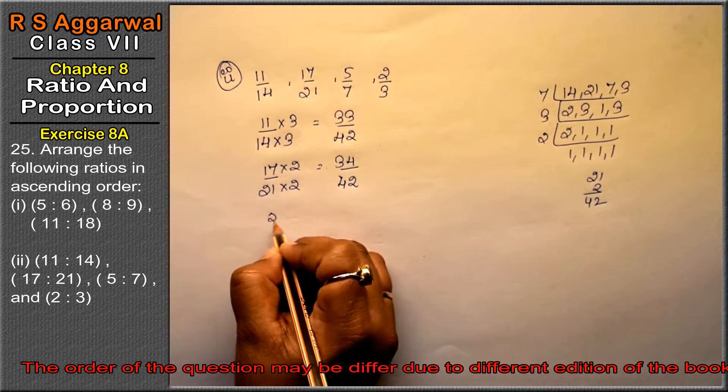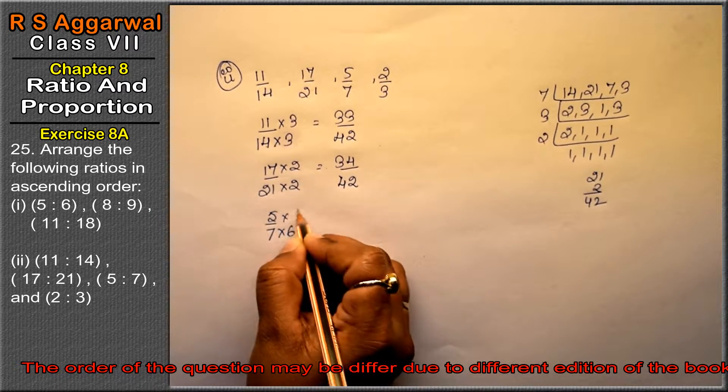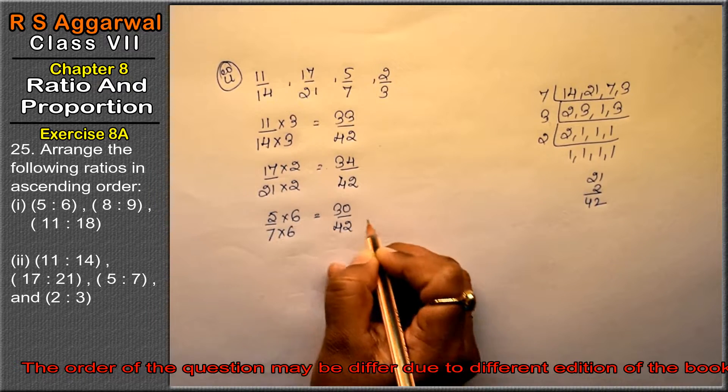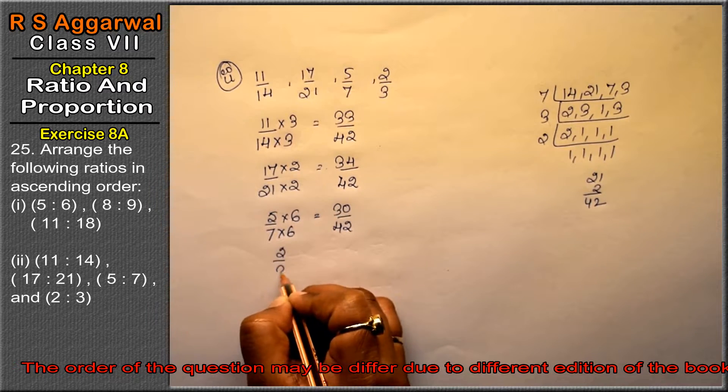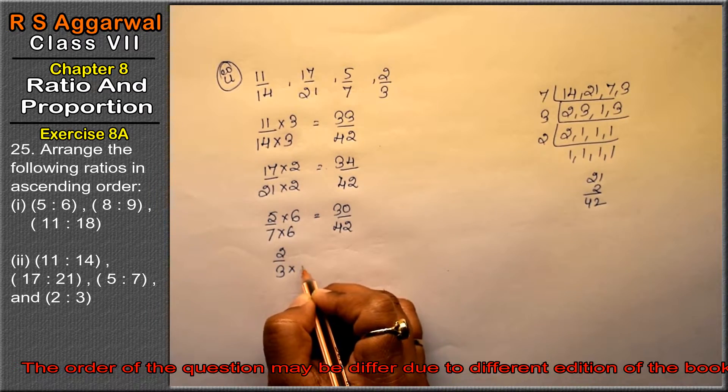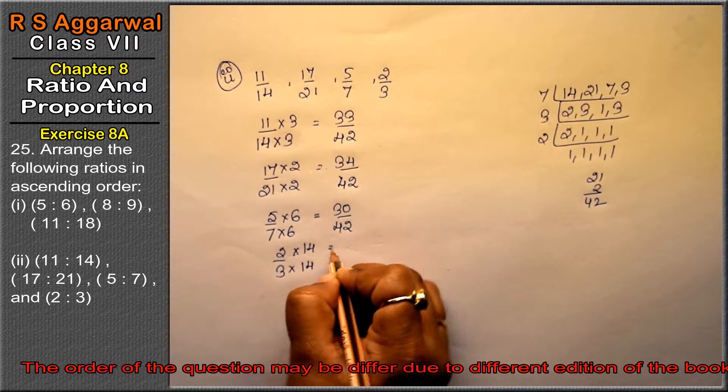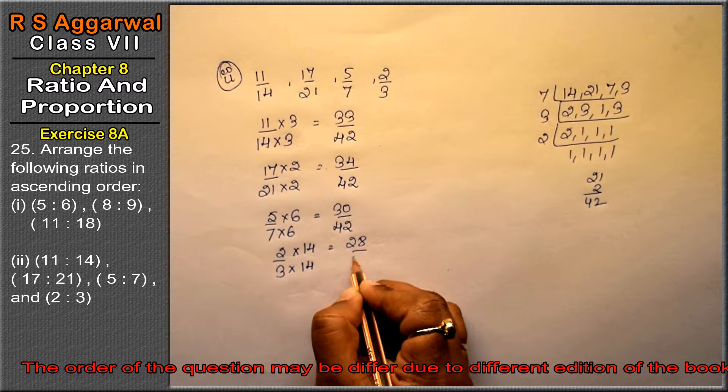Next is 5 upon 7. 7 into 6 is 42, so multiply by 6. It's 30 upon 42. Last one is 2 upon 3. 3 into 14 is 42, so it becomes 28 upon 42.